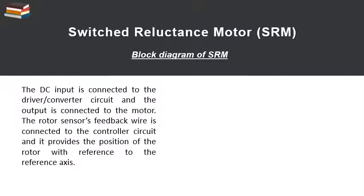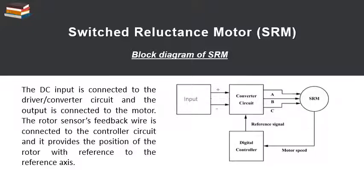Next is the block diagram of SRM. The DC input is connected to the driver or converter circuit and the output is connected to the motor. The rotor sensor's feedback is connected to the controller circuit and it provides the position of the rotor with reference to the reference axis. The main parts are the converter circuit, DC input, the digital controller, and the switched reluctance motor.